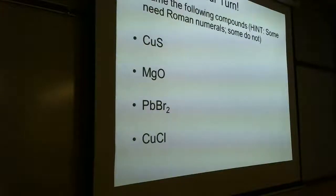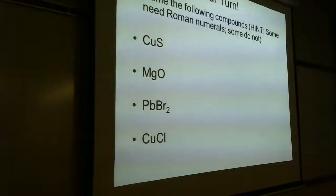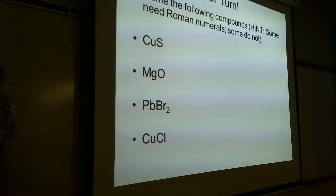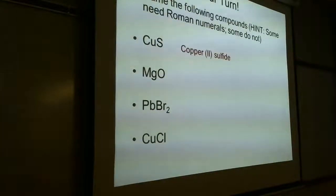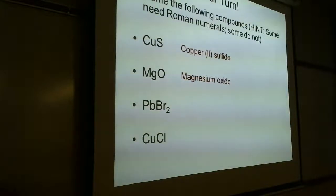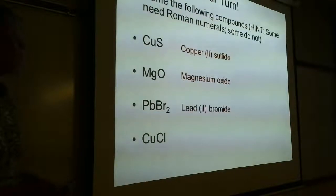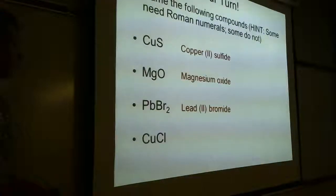Let's go over some examples. CuS needs Roman numerals — copper is a transition metal. Working backwards: sulfide is minus two, one copper balances one sulfide, so it's copper(II) sulfide. MgO does not need Roman numerals — it's simply magnesium oxide. PbBr₂: lead needs Roman numerals. Bromide is minus one, two bromides is minus two, so lead is plus two — lead(II) bromide. CuCl is copper(I) chloride.